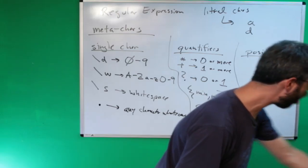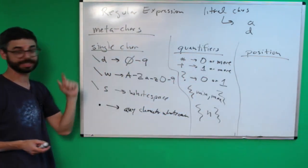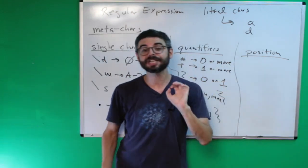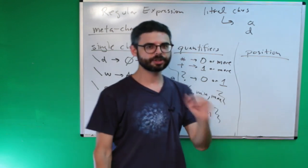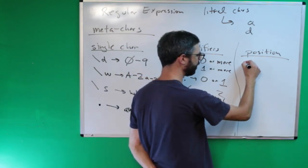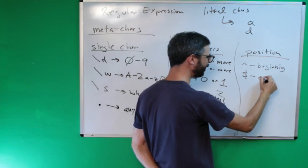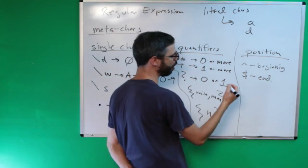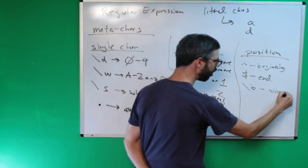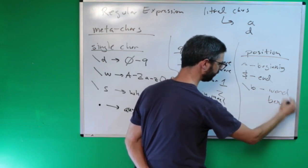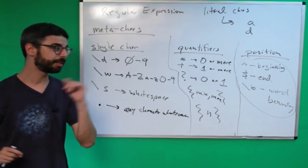So these are quantifiers — ways of indicating how many of a single character you want to match. Now, position is another kind of meta character, which matches the position of a character in the string itself. For example, there is caret which means the beginning of a line, and dollar sign which means the end of a line. Also in the position category is backslash B, which is known as a word boundary.